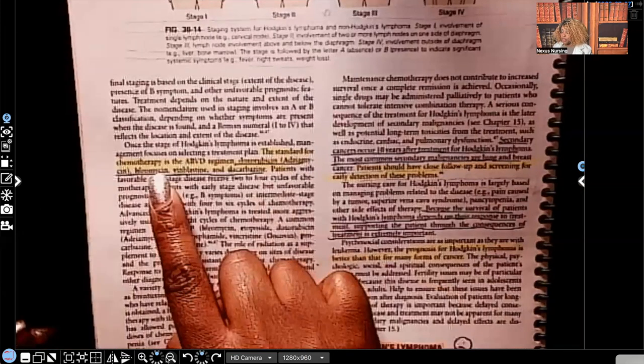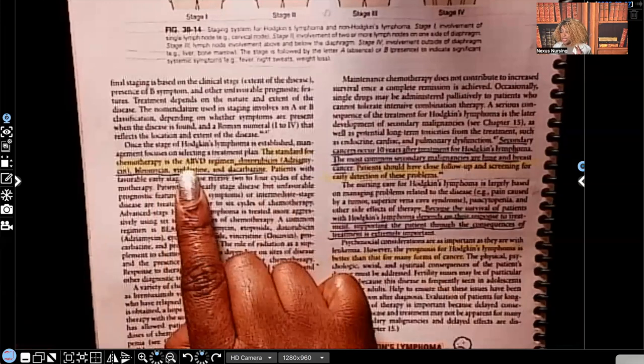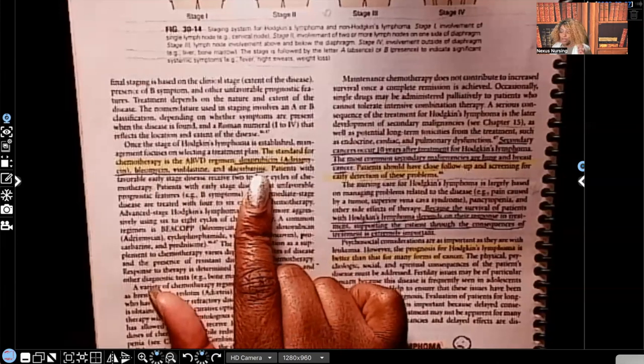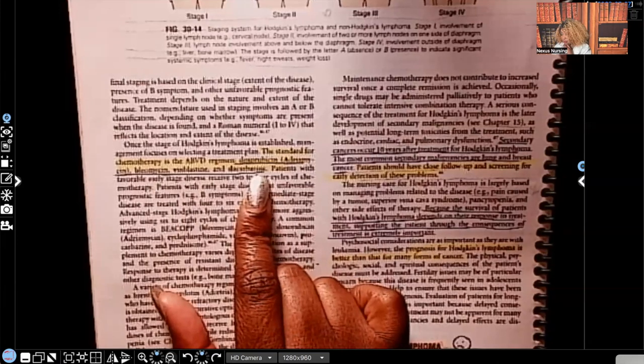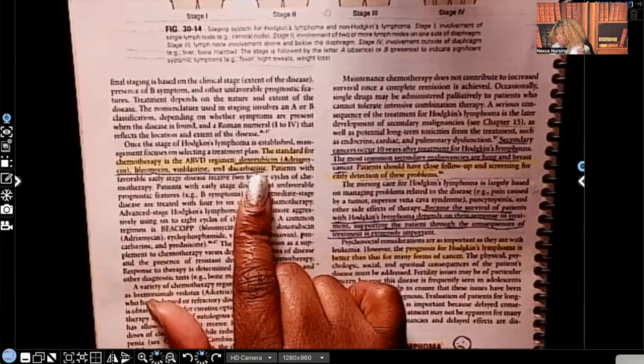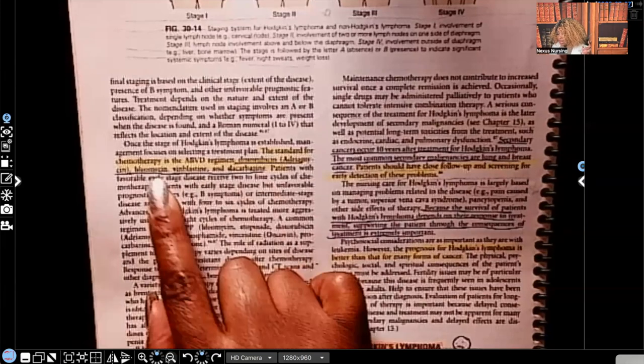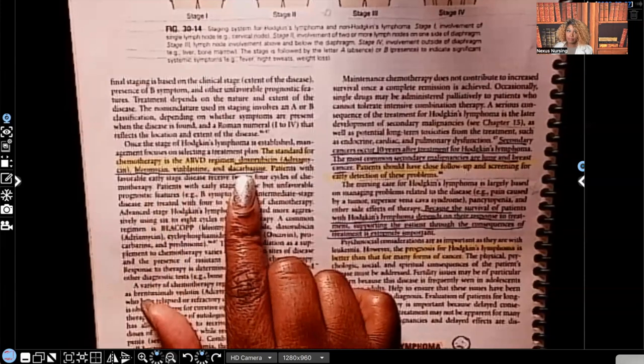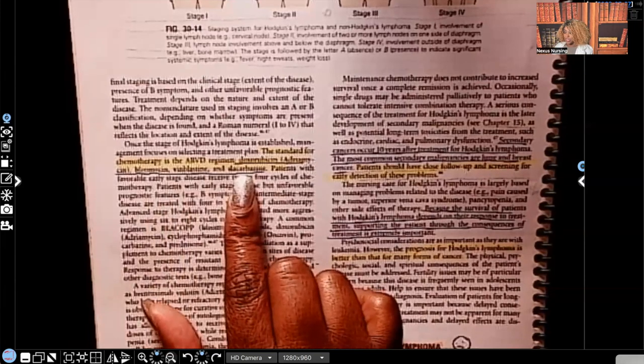The standard for chemotherapy is the ABVD regimen. Guys, you know I can't pronounce. I can't even speak. I'm not even going to try. Am I going to try to pronounce these drugs? Yeah, let's try. Doxorubicin, bleomycin, vinblastin, and dicarbazine. ABVD, those are the medications.